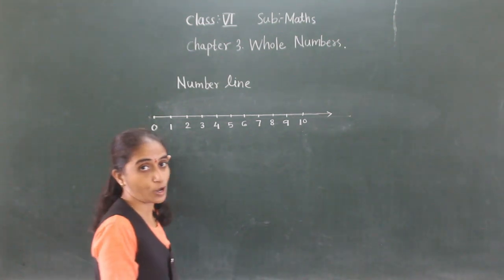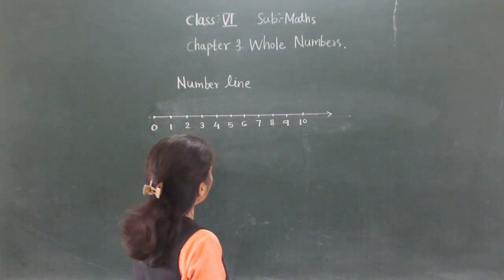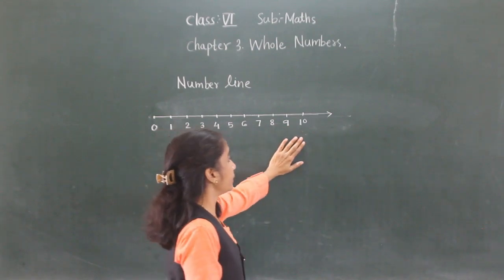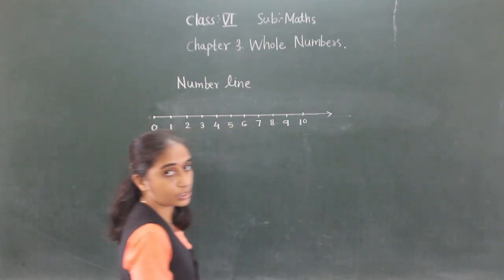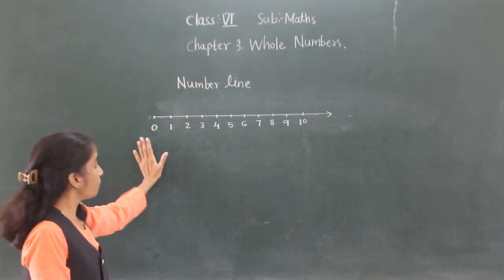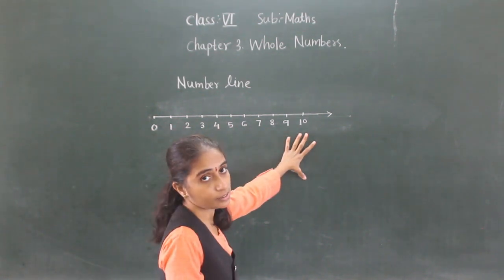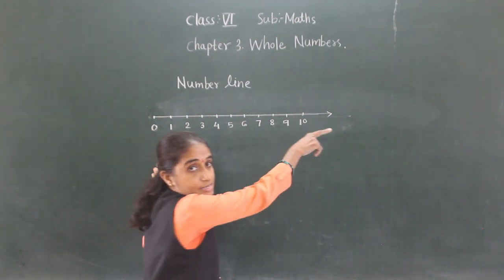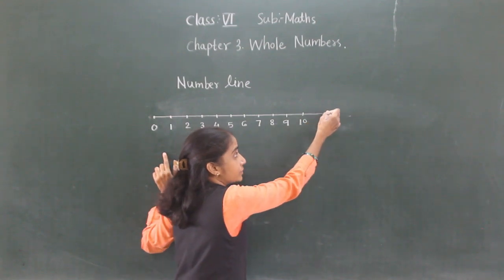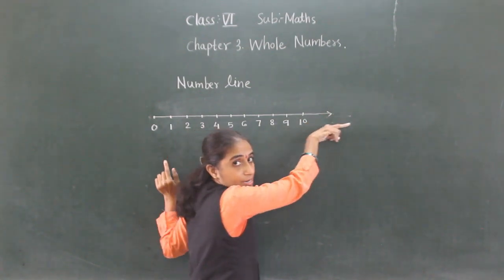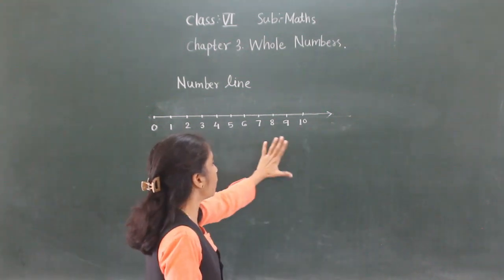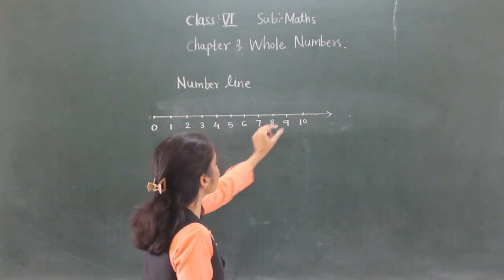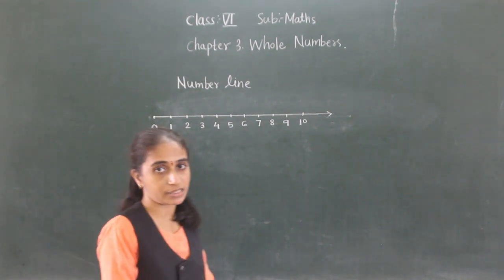Let's see the rules for numbering. The numbers must be equally spaced along the line. The whole number line can be extended in the right direction by any amount, but we use a small portion of the number line to understand it better.